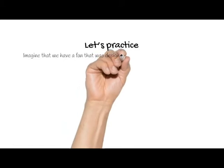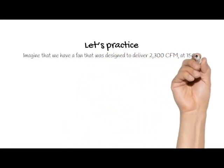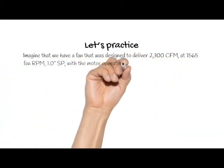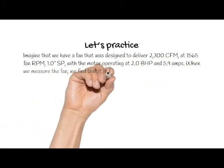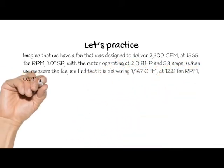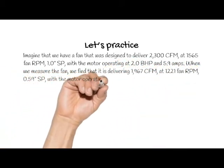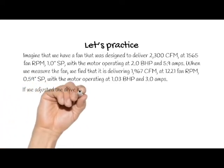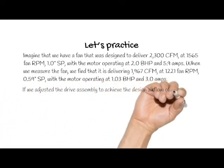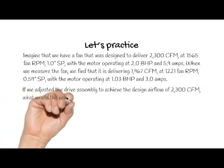Let's practice. Imagine that we have a fan that was designed to deliver 2,300 CFM at 1,565 fan RPM, 1.0 inches static pressure, with the motor operating at 2.0 brake horsepower and 5.9 amps. When we measure the fan, we find that it is delivering 1,967 CFM at 1,221 fan RPM, 0.59 inches static pressure, with the motor operating at 1.03 brake horsepower and 3.0 amps. If we adjust the drive assembly to achieve the design airflow of 2,300 CFM, what would the new operating conditions be?